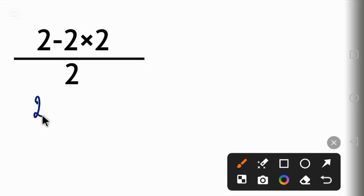We have 2 minus 2 times 2. We use parentheses to group it, divided by 2. Now this is where people make a mistake. They begin with this subtraction and this will give us zero as an answer.